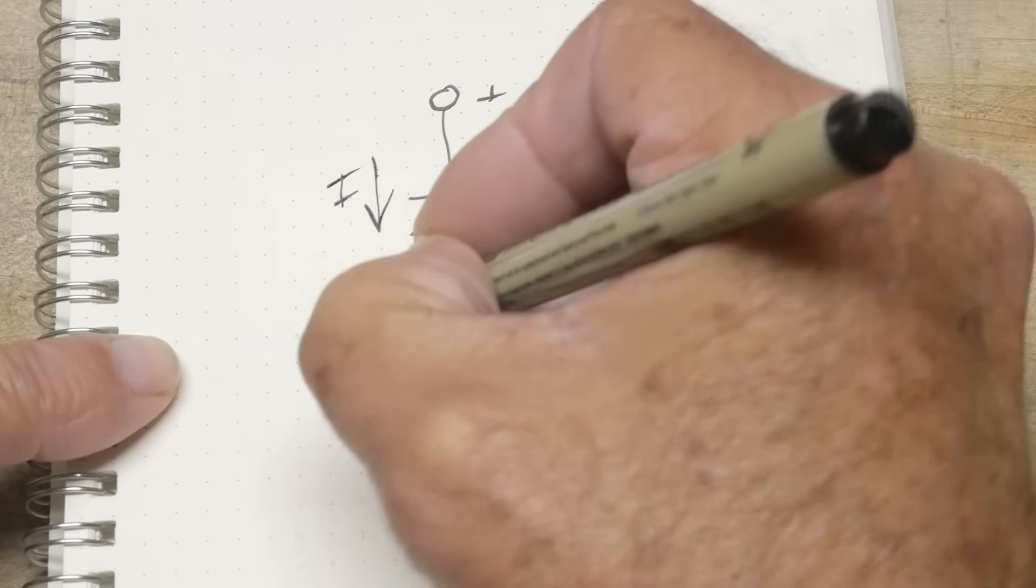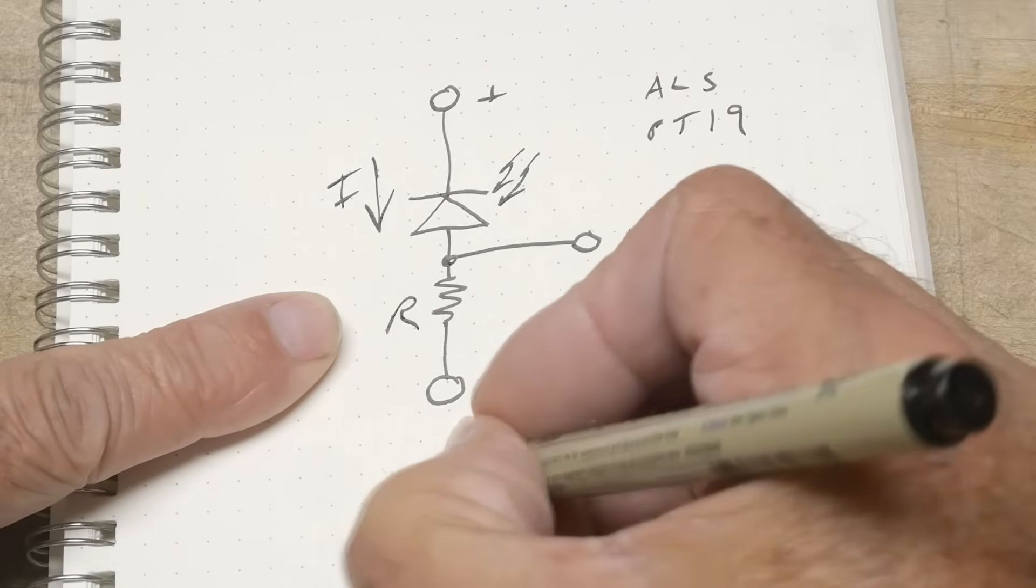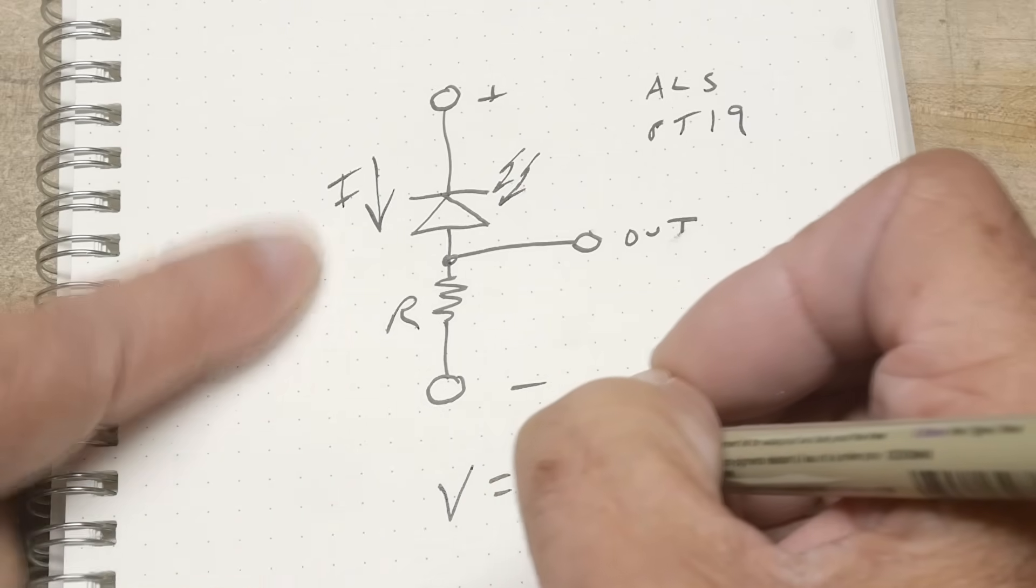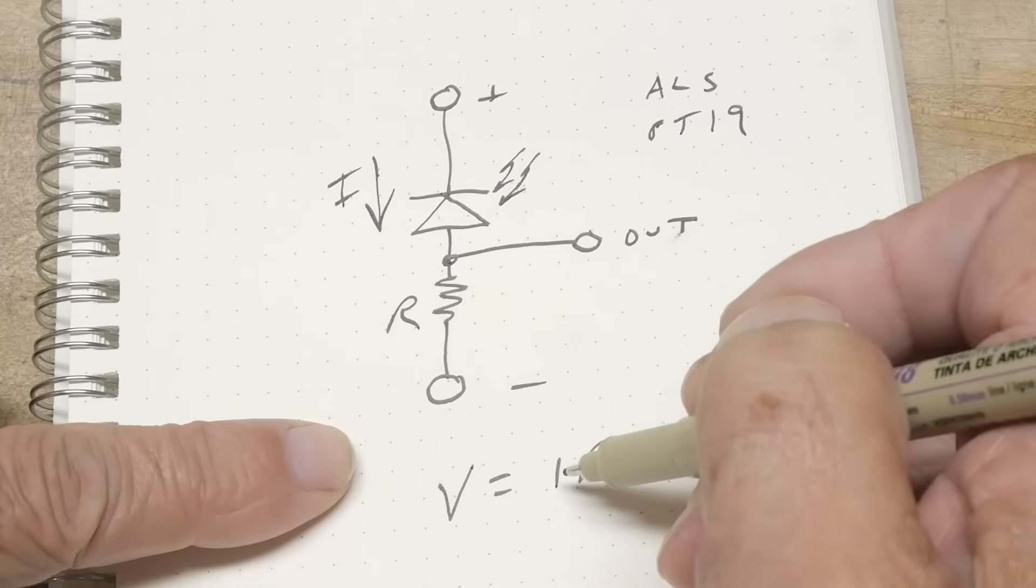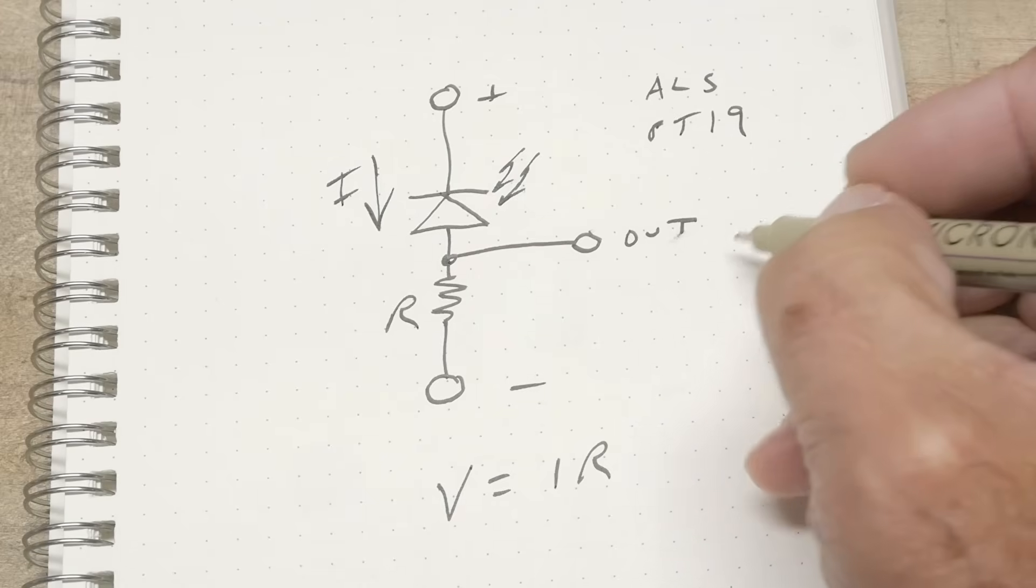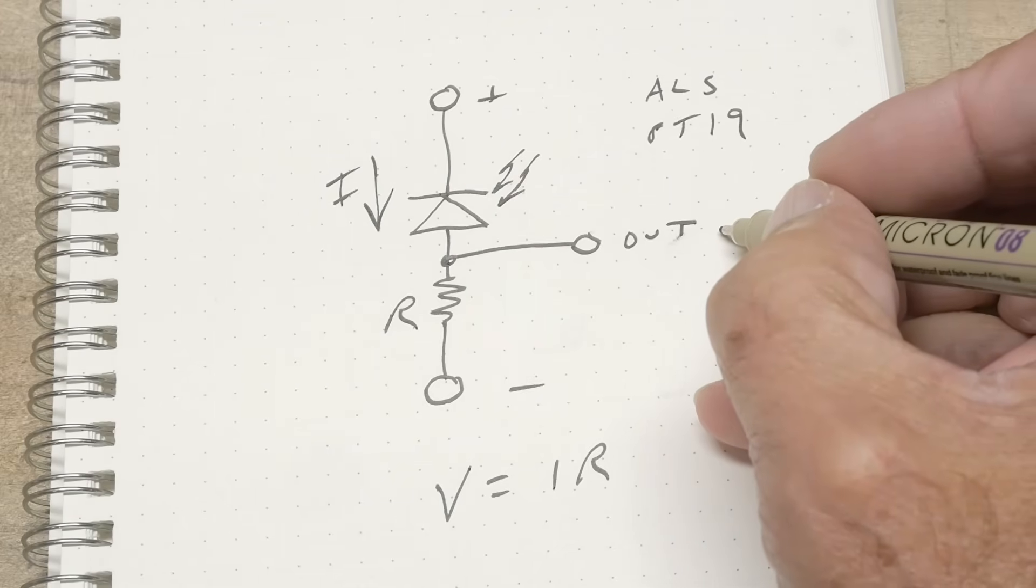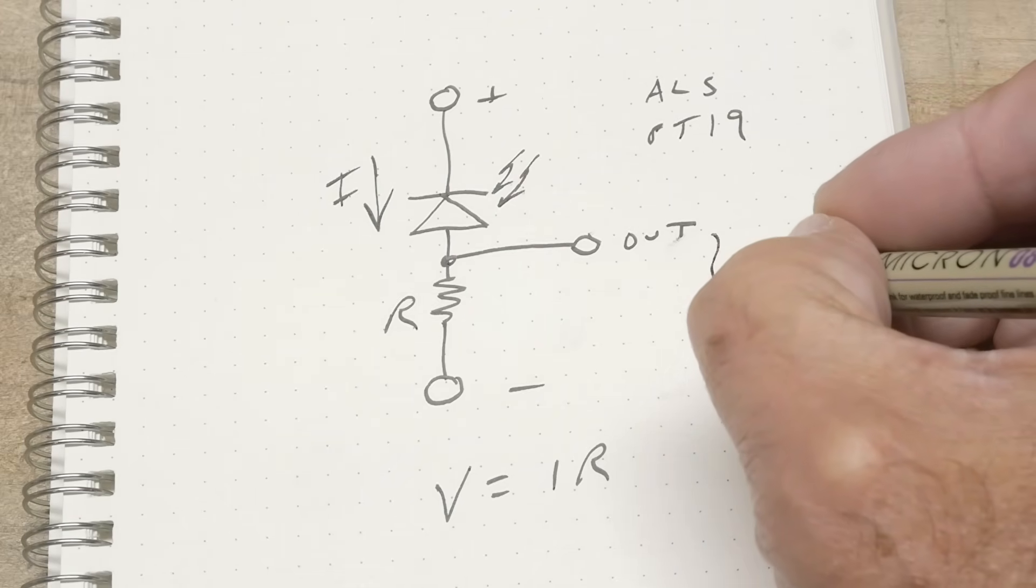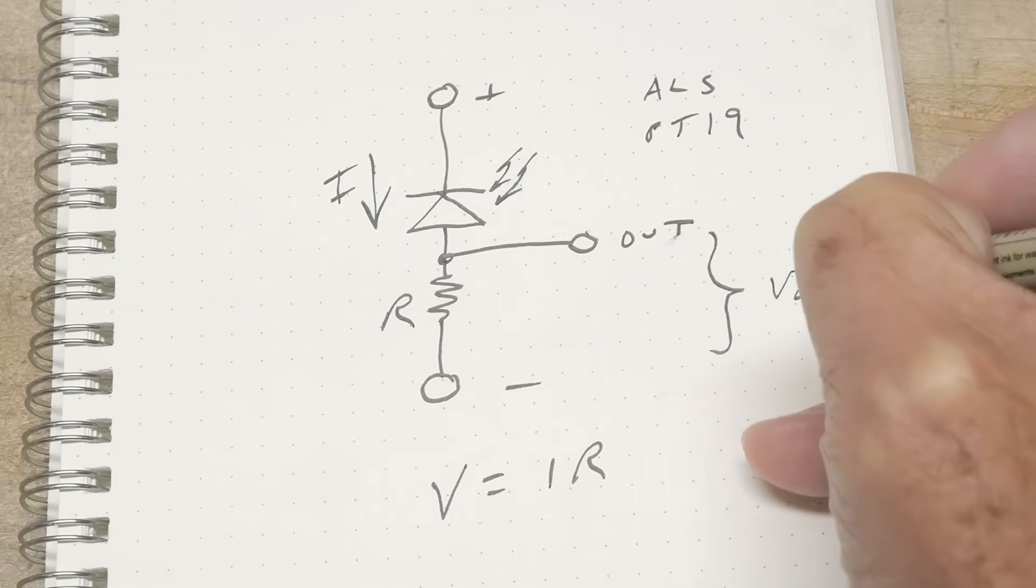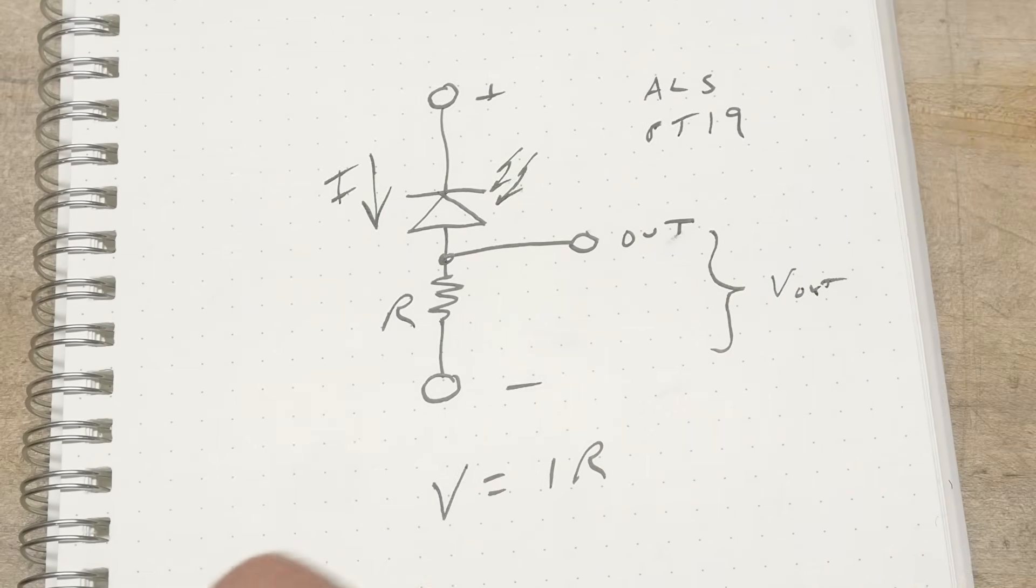And if this is an R, then V equals IR, okay? And so whatever current you have gets put across that resistor and creates a voltage. So you will be able to read a voltage out between these two signals, and that will be a measure of how bright the light is.